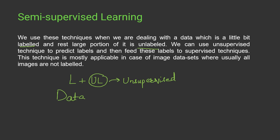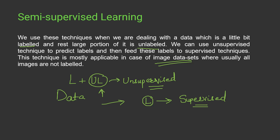Using the unsupervised technique, we predict the labels for the unlabeled data. Once those labels are predicted, the entire dataset becomes labeled, and we then apply supervised learning. That is why this technique is called semi-supervised — for one part we apply unsupervised learning, and for the remaining part we apply supervised learning. The major use of this technique is with image datasets, which are so large and raw that some images have labels and some don't.